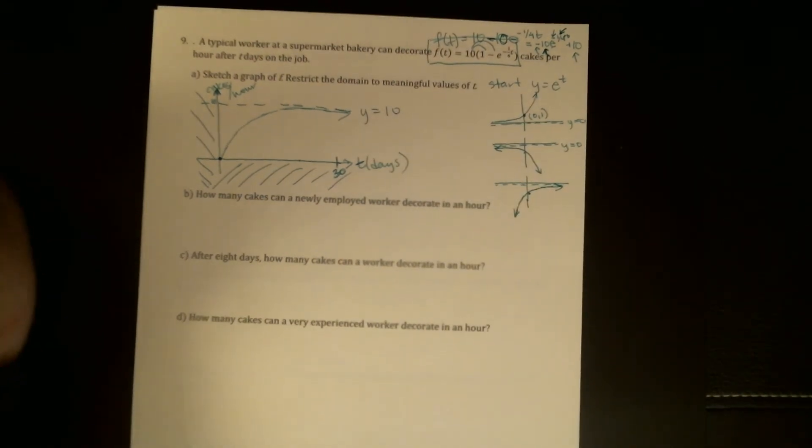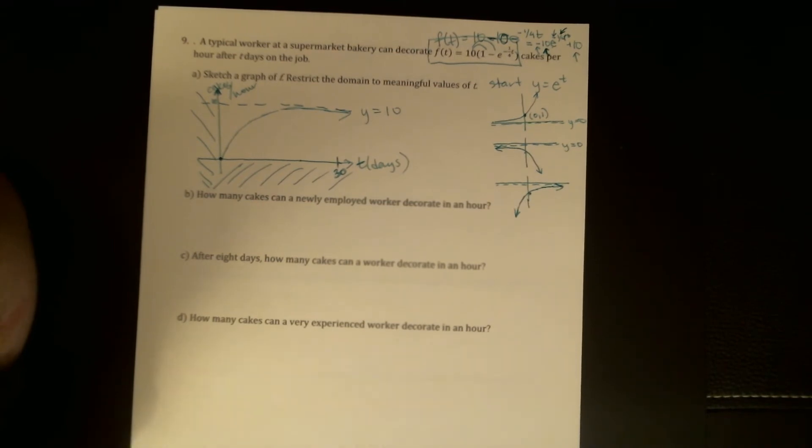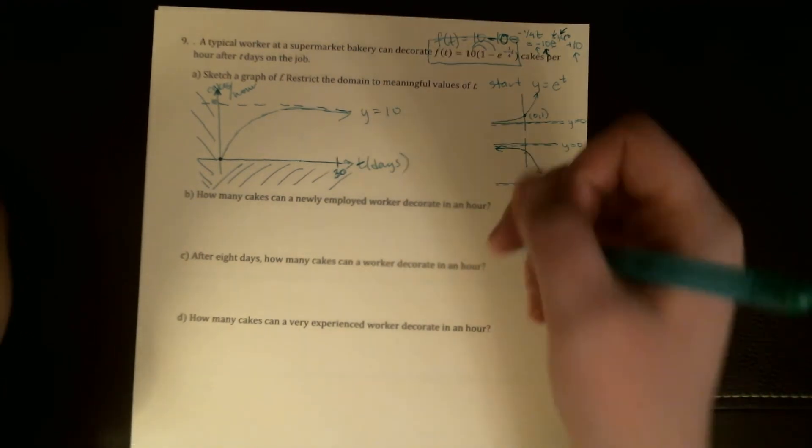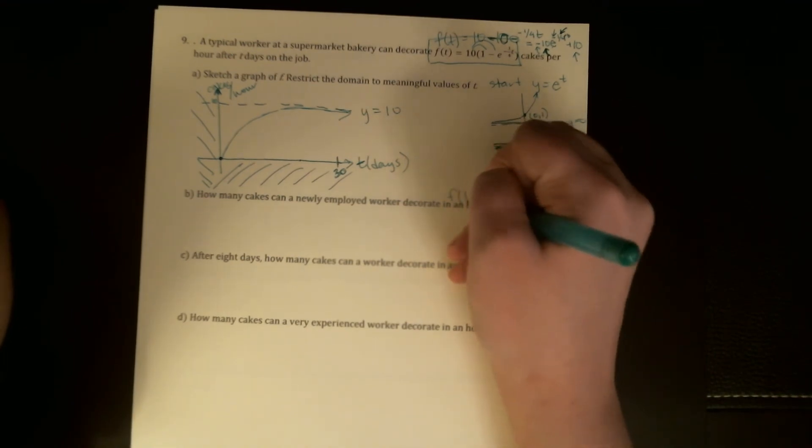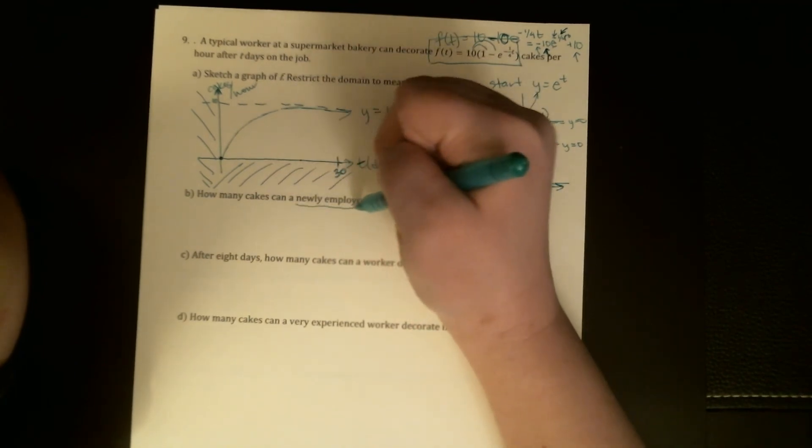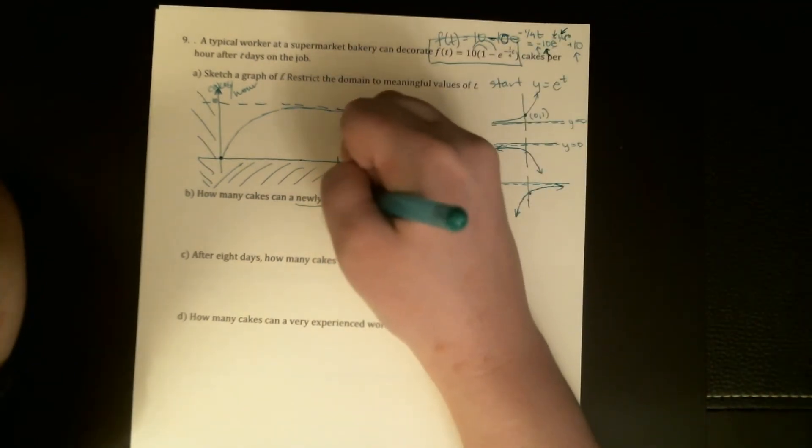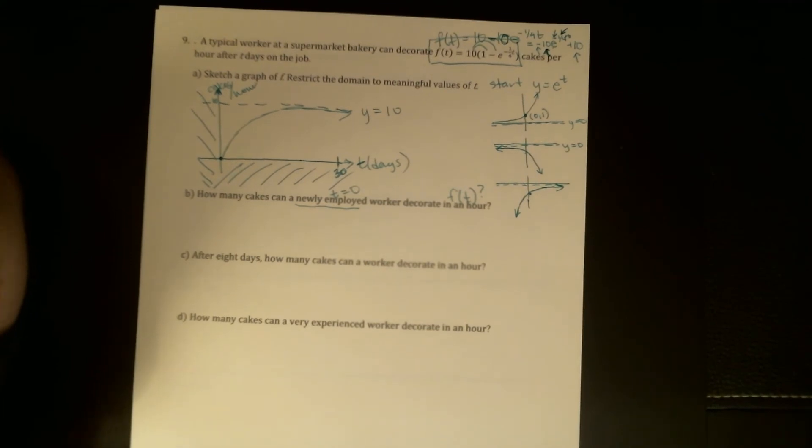So once we've got a graph, I hope that answering questions is fairly easy. You might have to plug in some values. If you've checked a graph on your calculator, you can use your calculator to do that. But mostly, once you've got a picture and you know what's going on, I think these should be pretty straightforward. So first question, how many cakes can a newly employed worker decorate in an hour? Okay, so this is asking me for an f(t) value. And the slightly hidden info in here is this newly employed, which is implying that t should equal zero.